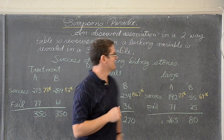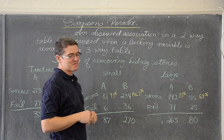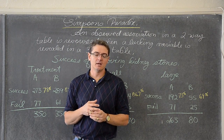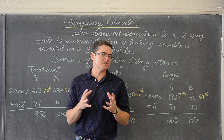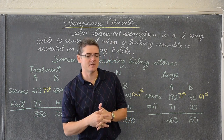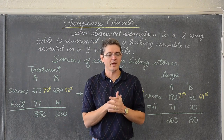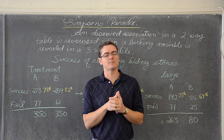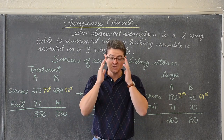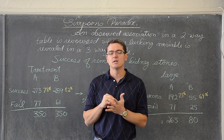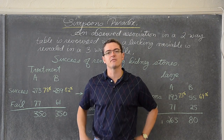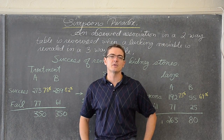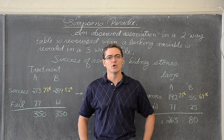Hello, Mr. Tarrou again. We are going to take a look at Simpson's Paradox. This is going to finish our discussion of analyzing two-way tables. When we analyze two-way tables and look for a relationship between two categorical variables, we won't actually be able to test for association until much later in the textbook, when we learn something called a chi-square goodness of fit test.